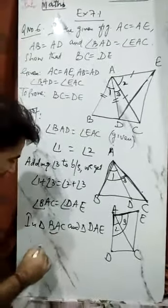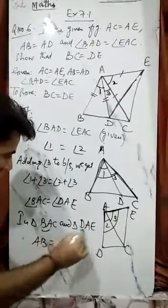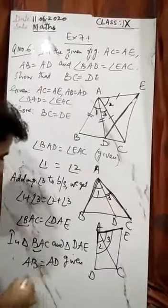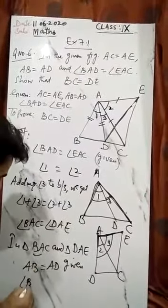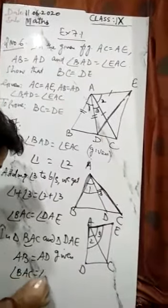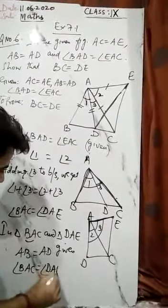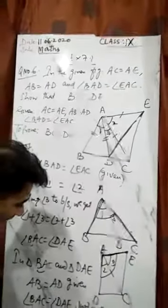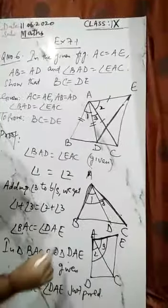Now AB of BAC is given equal to AD. This is given to you, so the first part is done. Second, you just proved angle BAC is equal to angle DAE. You can write 'proved above'.